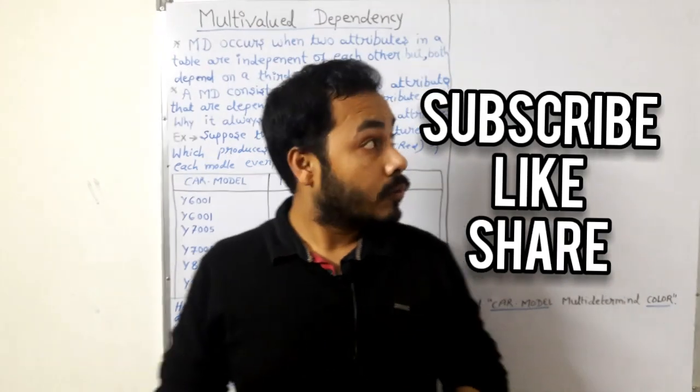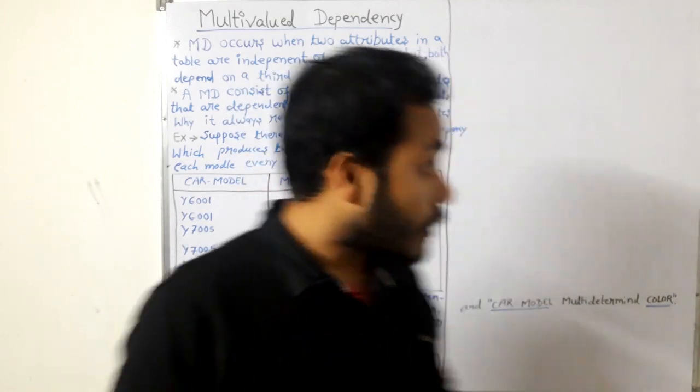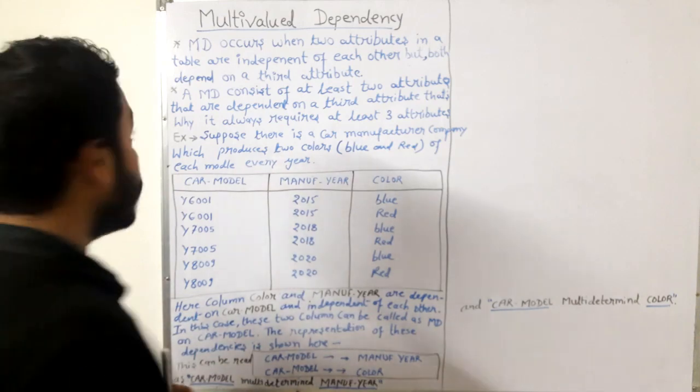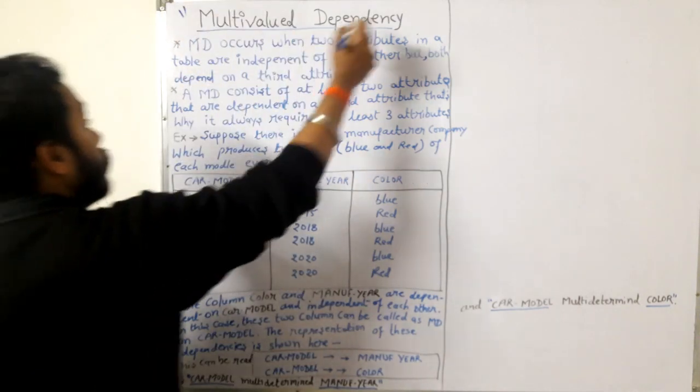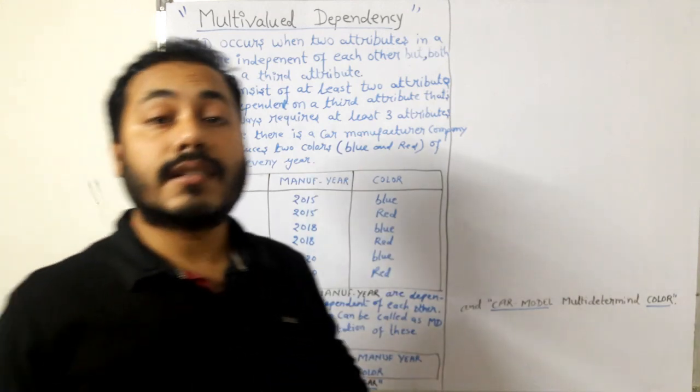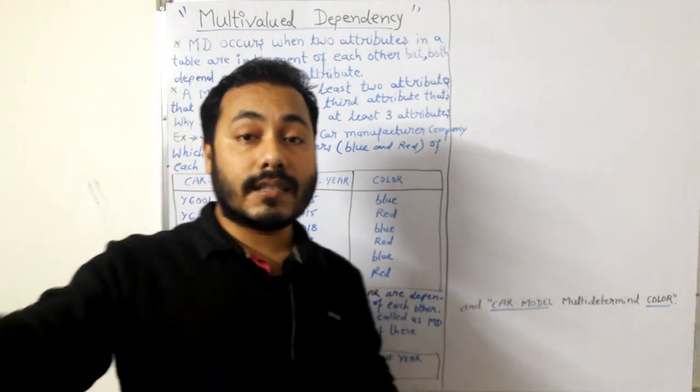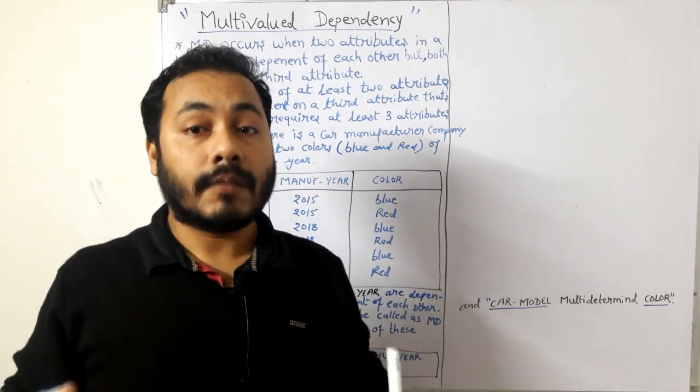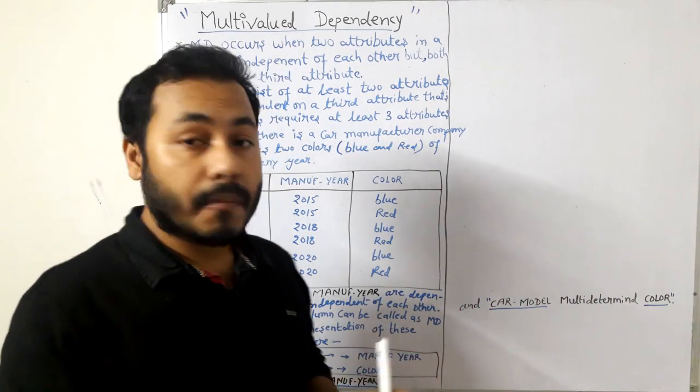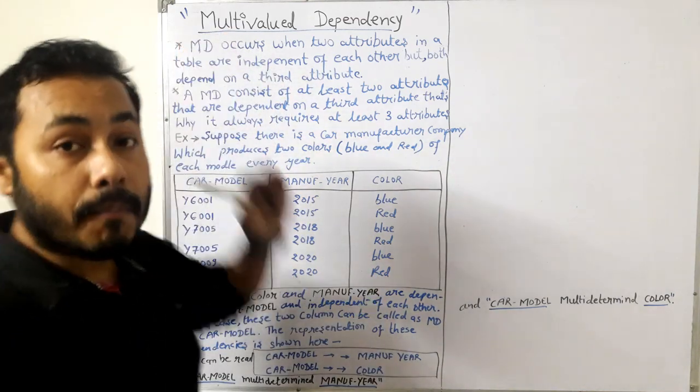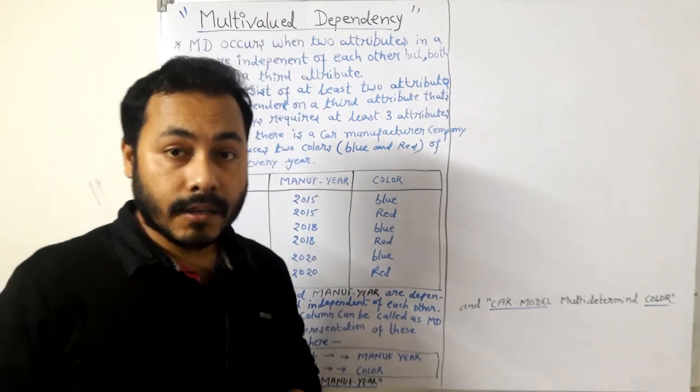Today I have brought one important topic: multi-valued dependency. I want to discuss this because in the next lecture I am going to discuss fourth normal form. You can understand fourth normal form only when you have a clear idea about multi-valued dependency.